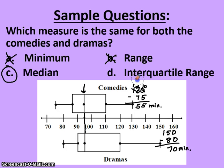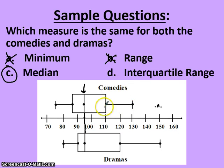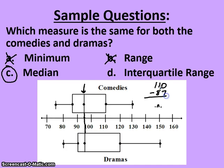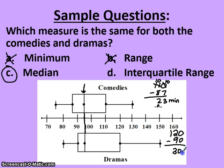We should always check all answer choices, so let's look at the interquartile range as well. The interquartile range for comedies goes from about 87 to 110, giving 23 minutes. The interquartile range for dramas goes from 90 to 120, making a 30-minute difference. So the interquartile ranges are not the same, eliminating answer D. That leaves us with C — the median is the same for both comedies and dramas.